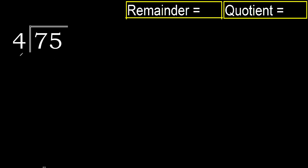75 divided by 4. 7 is not less, so we work with 7. 4 multiplied by which number is nearest to 7 but not greater? 4 multiplied by 2 is 8 — that is greater. 4 multiplied by 1 is 4 — not greater. 7 minus 4 is 3.